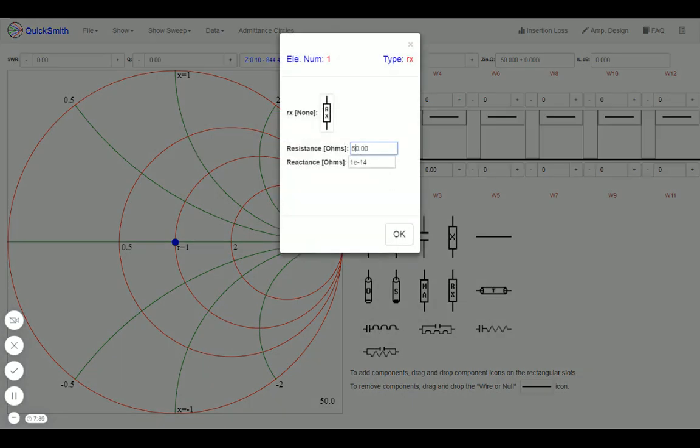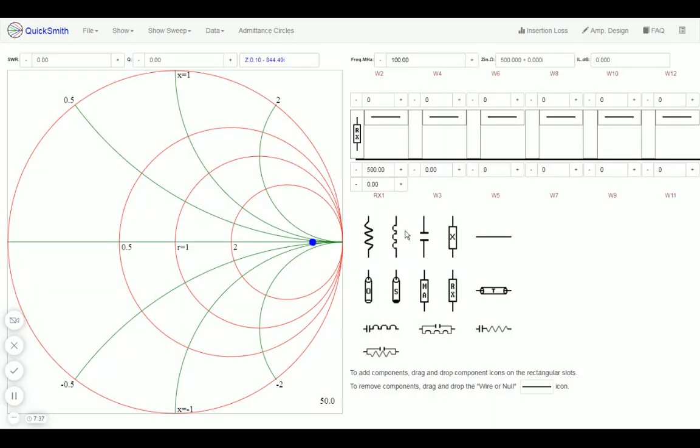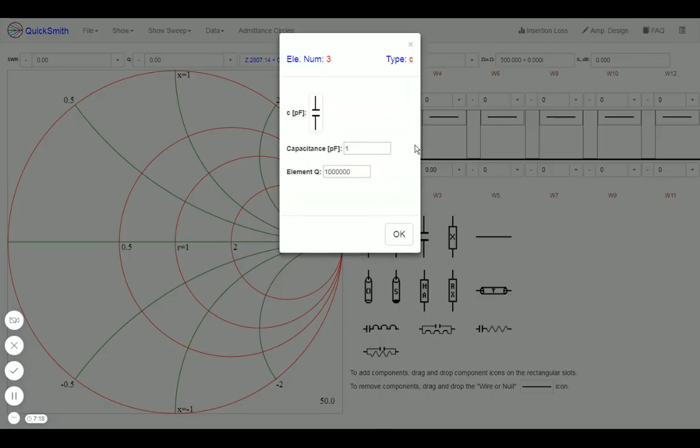Next step, we take the mouse pointer and place it on the blue dot, and you'll see on the right side you get matching tips. Let's pick the second network, so we take a parallel capacitor and place it on the parallel slot.